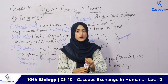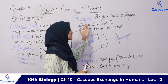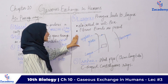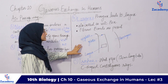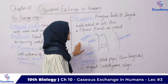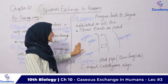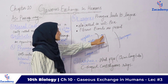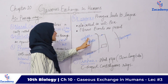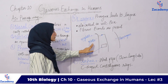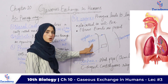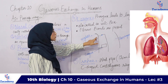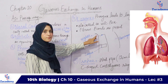The larynx has a structure present. At the floor of the pharynx, we have an opening called the glottis. The glottis is covered by a flap called the epiglottis.